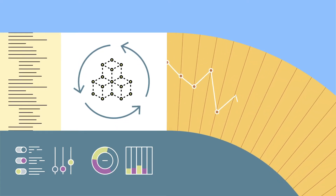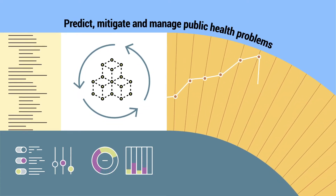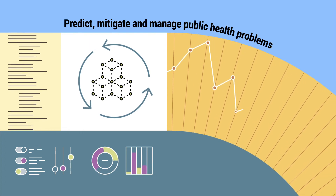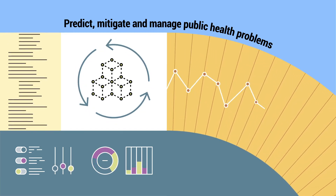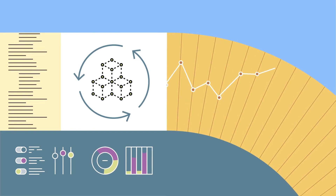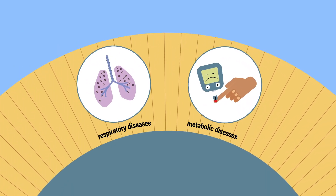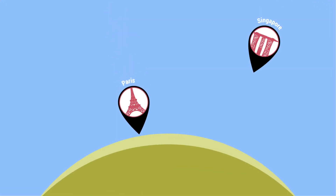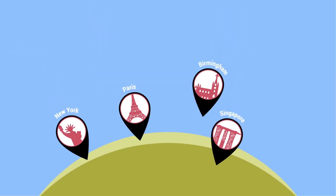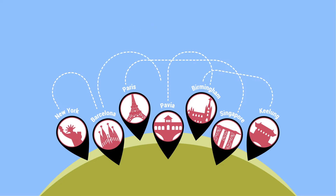The Pulse project aims to build models and technologies to predict, mitigate and manage public health problems and promote health and wellbeing in cities. The project focuses on respiratory diseases and diabetes. To tackle these issues, Pulse engages in a collaborative dialogue with a range of stakeholders across seven global cities.